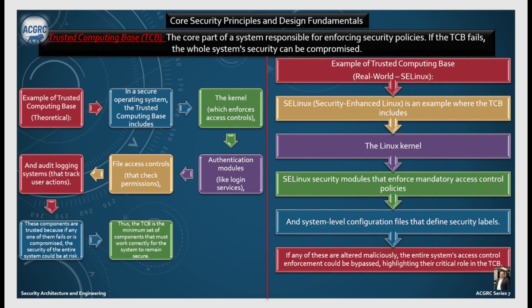For a real-world example, consider SELinux. Security-Enhanced Linux is an example where the TCB includes the Linux kernel, the SELinux security module that enforces mandatory access control policy, and system-level configuration files that define the security labels. If any of these are altered maliciously, the entire system's access control enforcement could be bypassed, highlighting their critical role in the TCB.